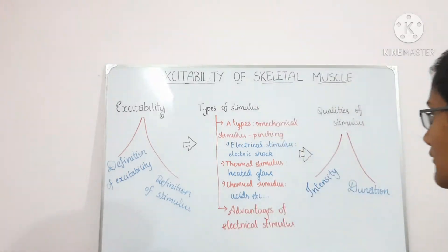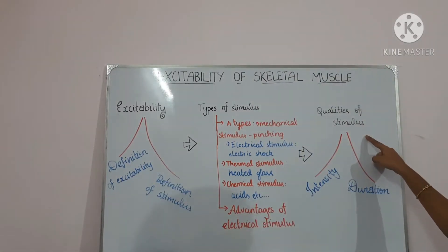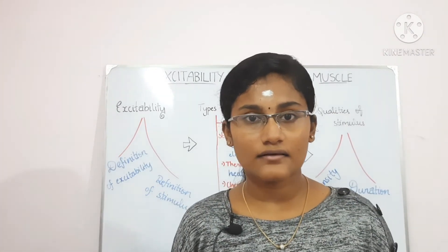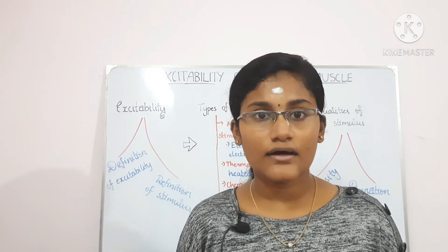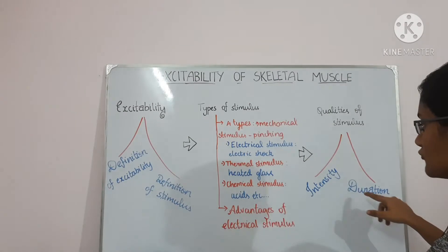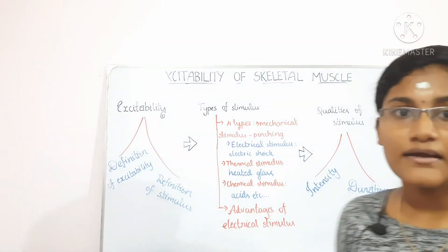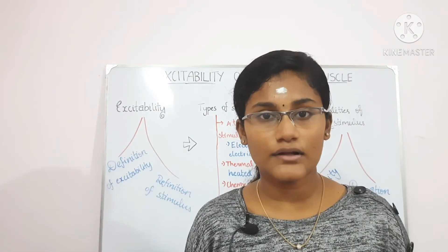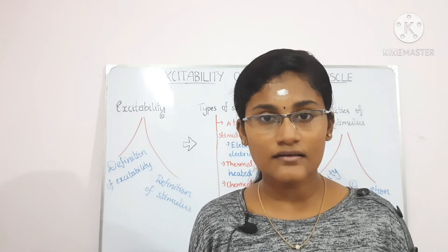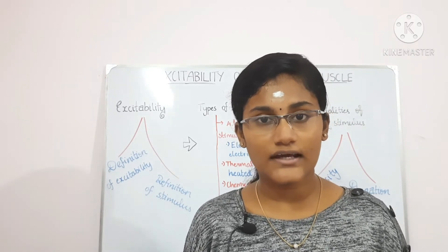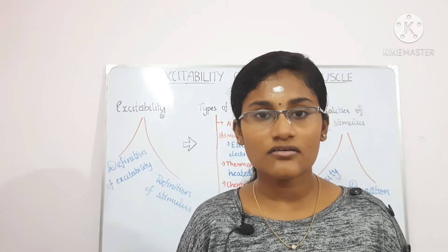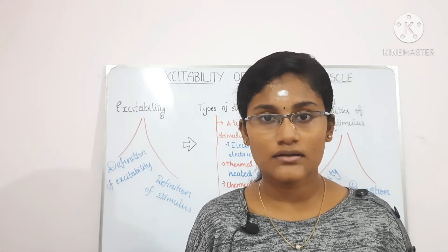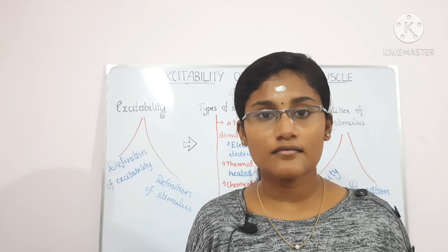The stimulus must have two basic characteristics: intensity and duration. The intensity of the stimulus is also known as the strength of the stimulus — in the case of electrical stimulus, the intensity is the voltage. The duration of the stimulus is the time to which you apply the stimulus.